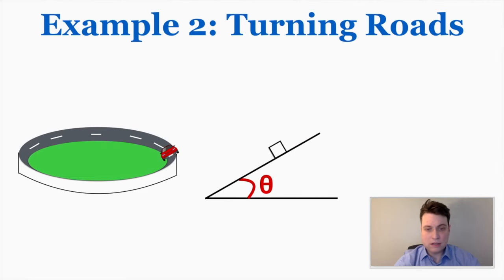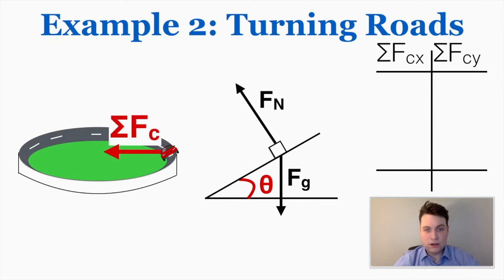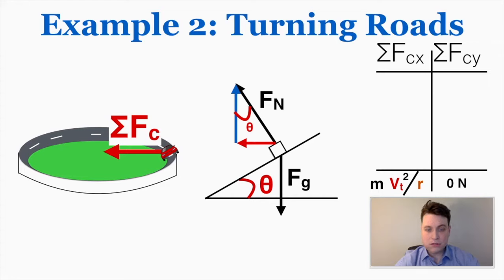Making a free body diagram, I have a force of gravity down — that's always the case — and an upward normal force. The net force has to point straight toward the center of the circle, because this car is turning perfectly horizontally; it's not getting higher or lower on the banked road. So the net force has to be perfectly horizontal. Breaking the normal force into its x and y components, the angle of the ramp equals the top angle of the normal force vector, giving normal force times cosine for the y component and normal force times sine for the x component.